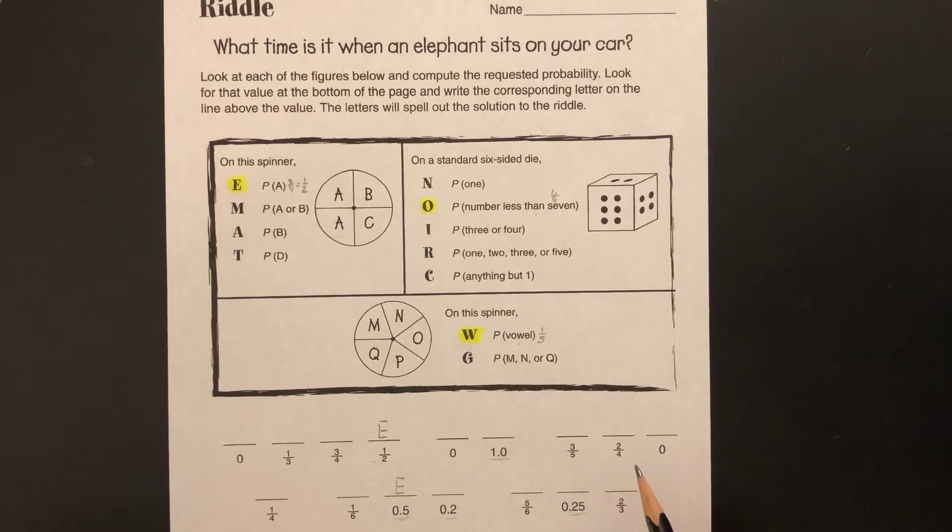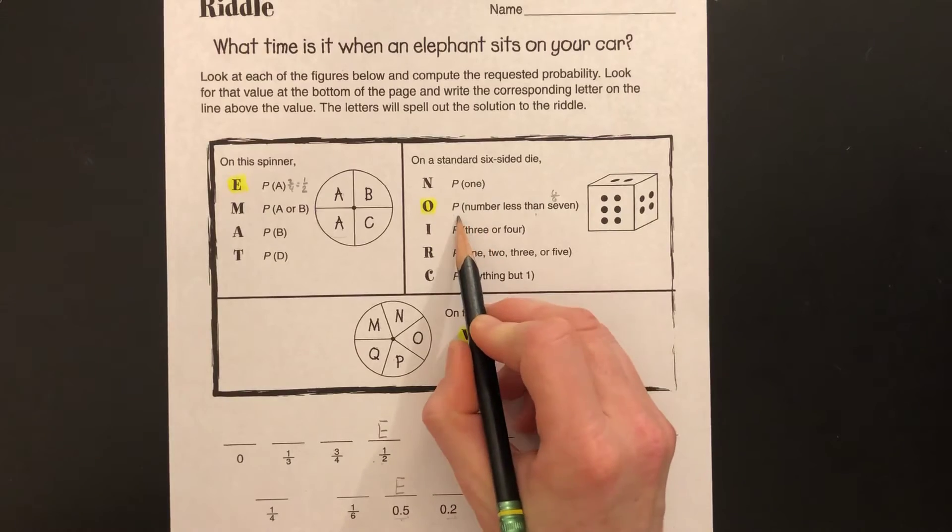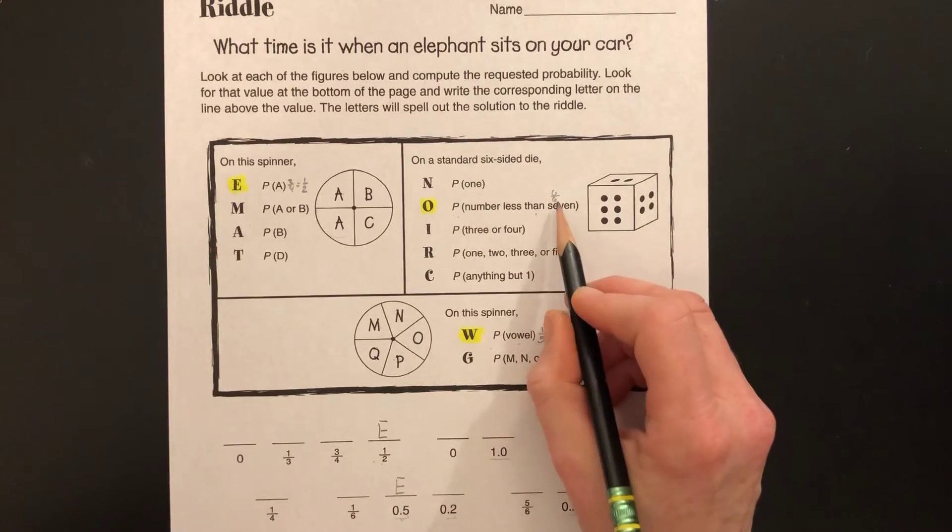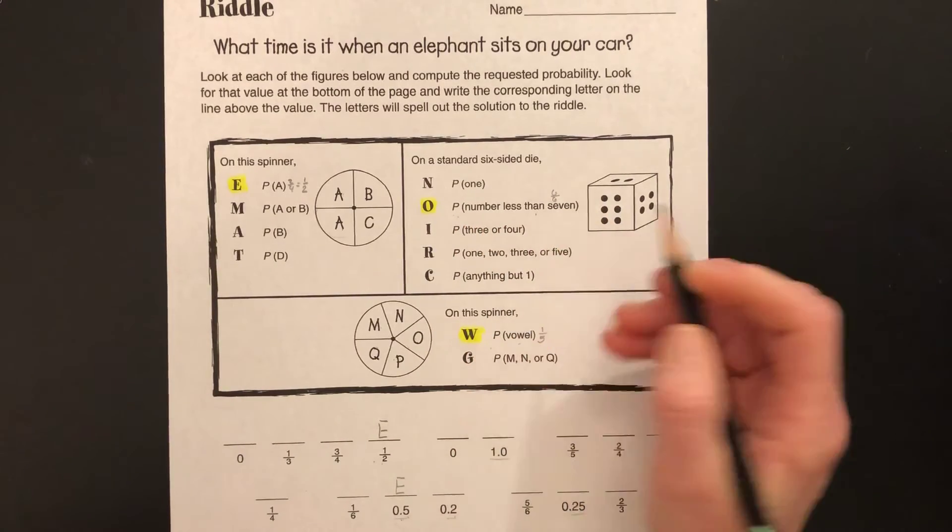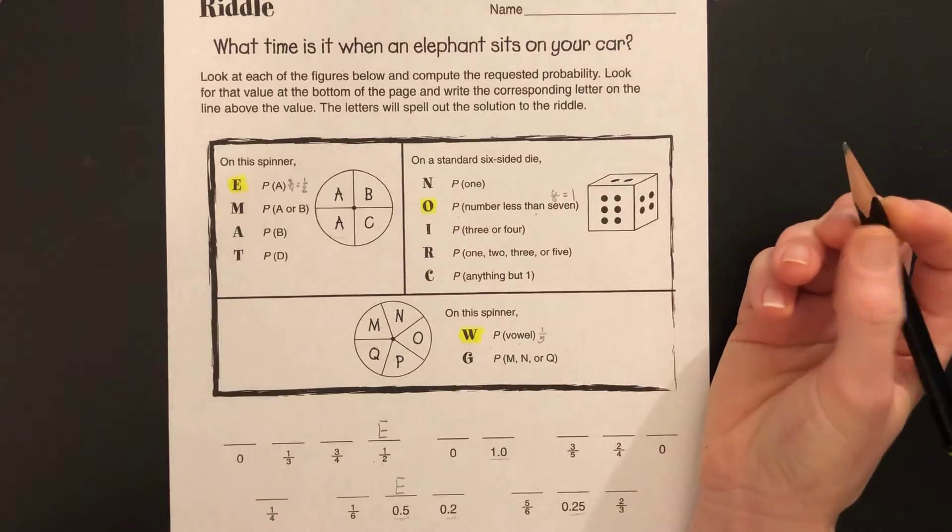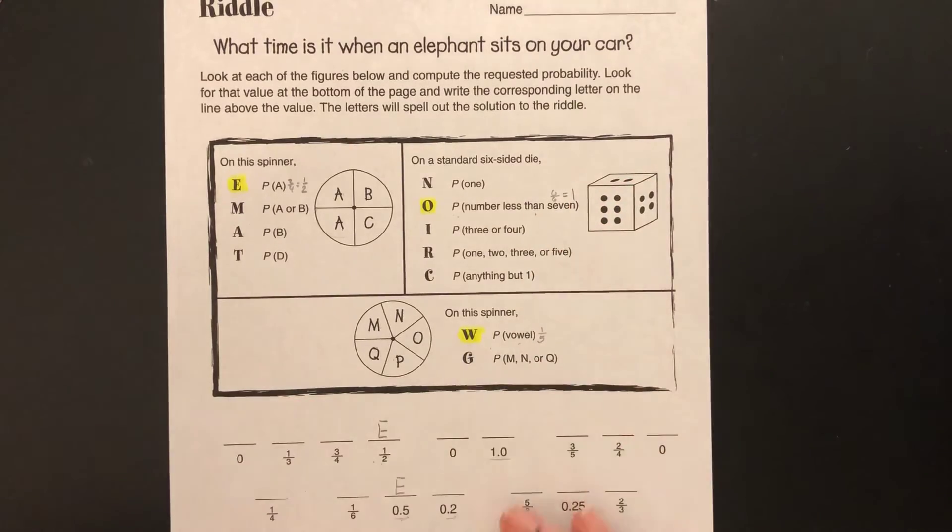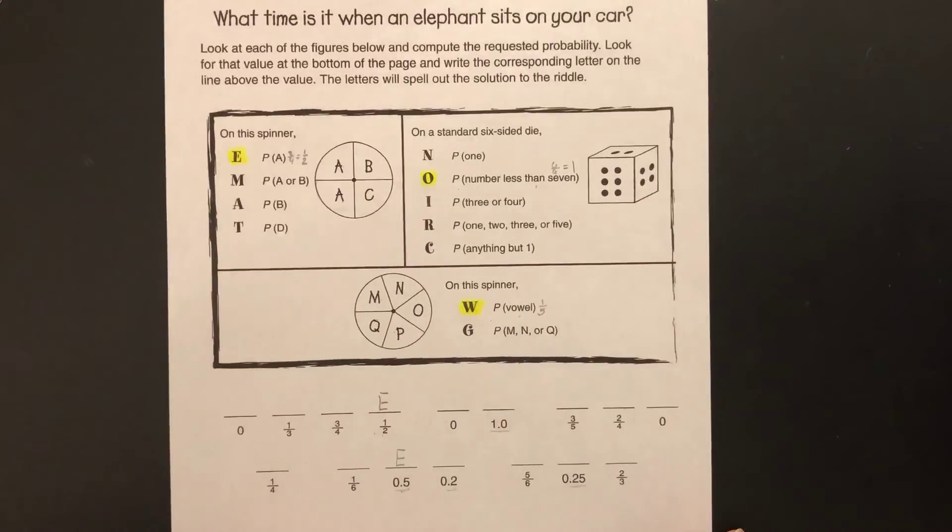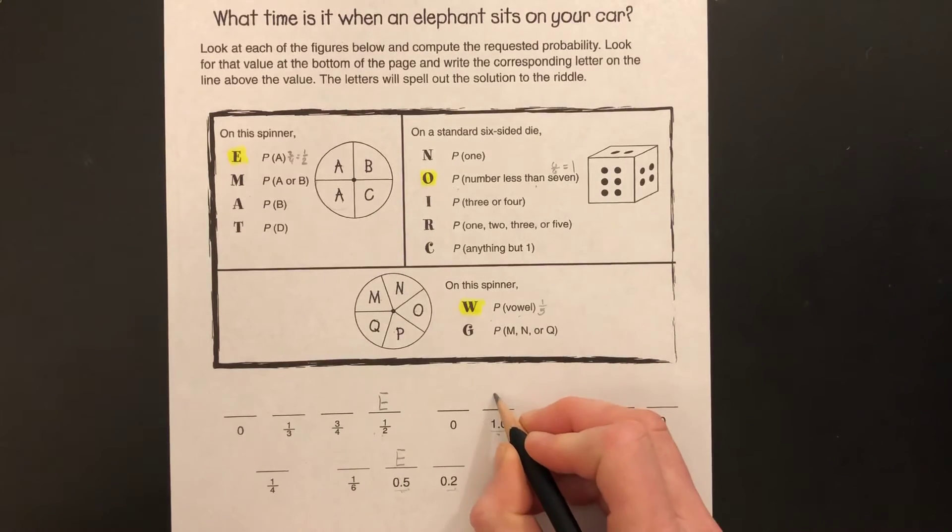Most of these are in your standard fraction form, but sometimes they chose to convert it to decimal form as well. The probability of a number less than seven, we said, was six out of six. I don't see a six out of six, but that converts to one whole. Do we see one down here that's one whole? This one right here. One whole would make this one O.